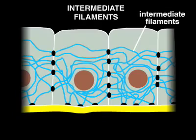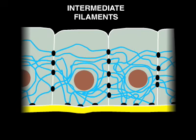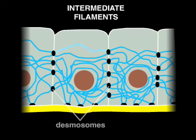Intermediate filaments are found in animal cells that require a lot of strength, such as the epithelial cells of the skin. Some of these filaments span the length of the cell, connecting cell-cell junctions called desmosomes.